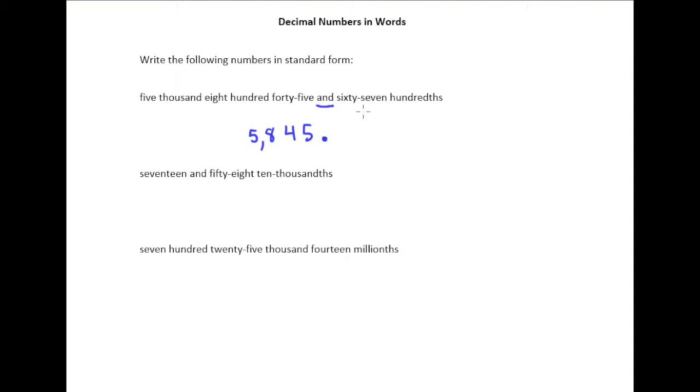Now on the right of the decimal point, it says 67 hundredths. So here's what I suggest you do in these cases—first take a look at the place value, the hundredths place. And I would just count over place values, maybe put a little line after the decimal point for each place value. So I know it goes tenths, hundredths.